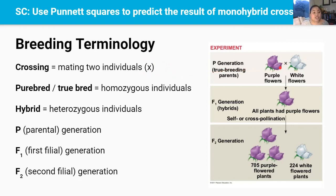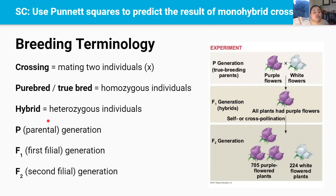The second word is purebred or truebred. A purebred or truebred individual is a homozygous individual, and they can either be homozygous dominant or homozygous recessive. The third word is hybrid. A hybrid individual is a heterozygous individual, and we get these hybrid individuals by mating two truebreeding or purebred varieties.